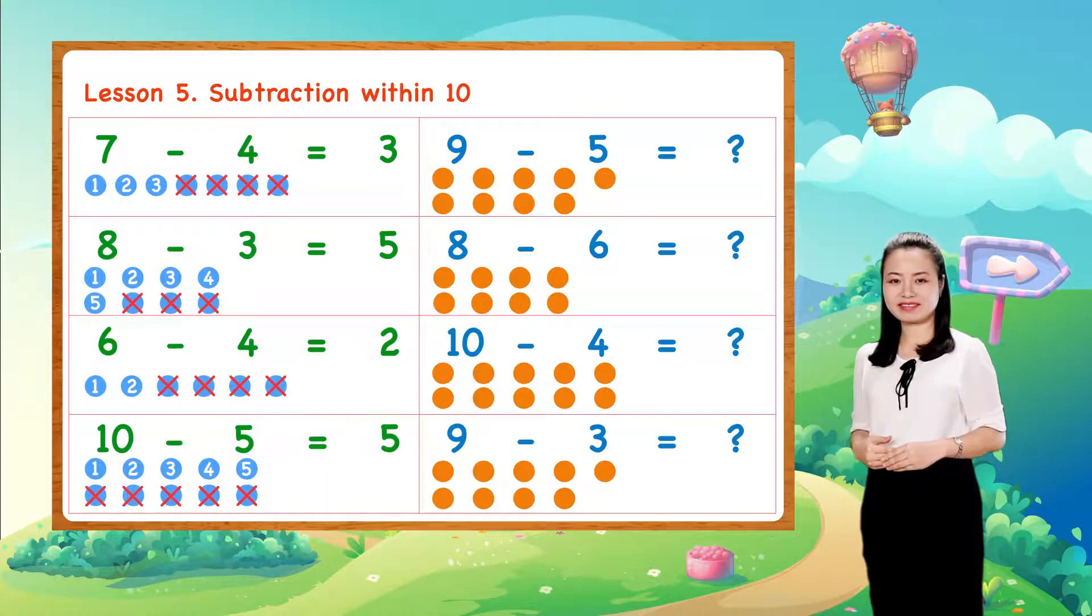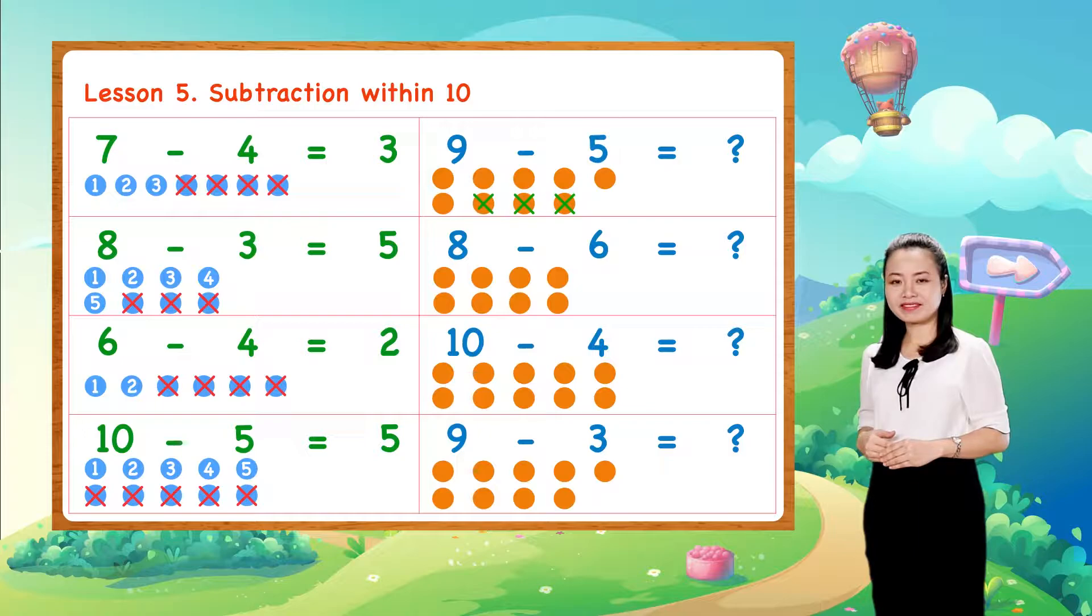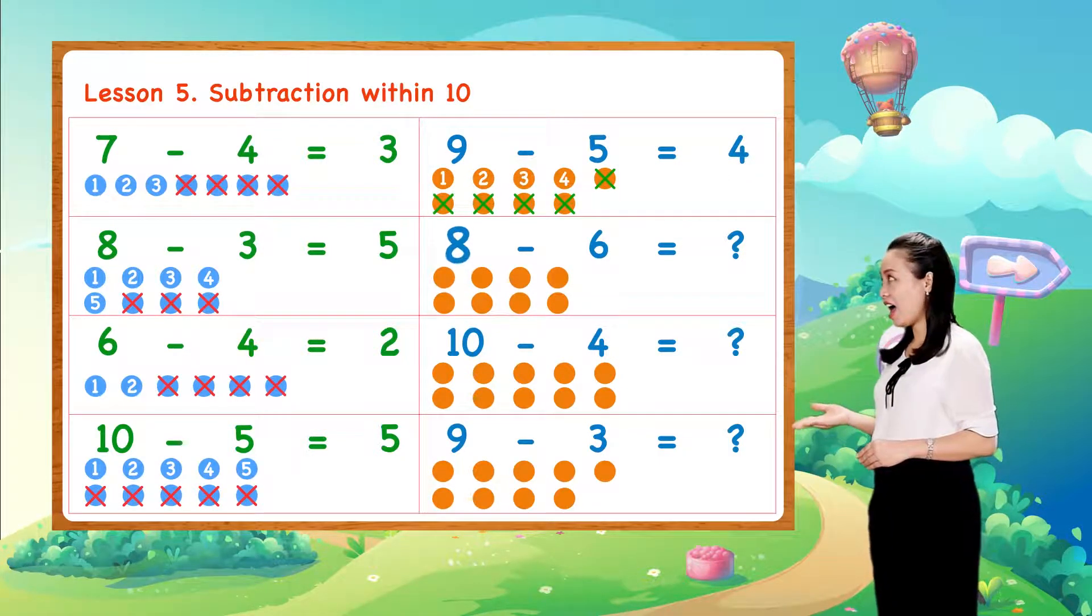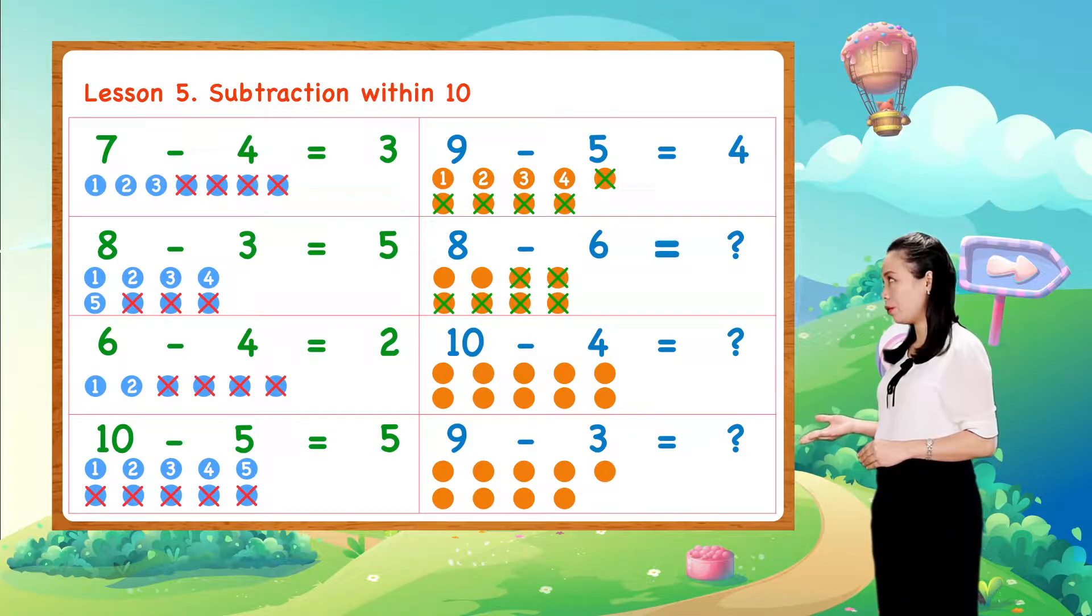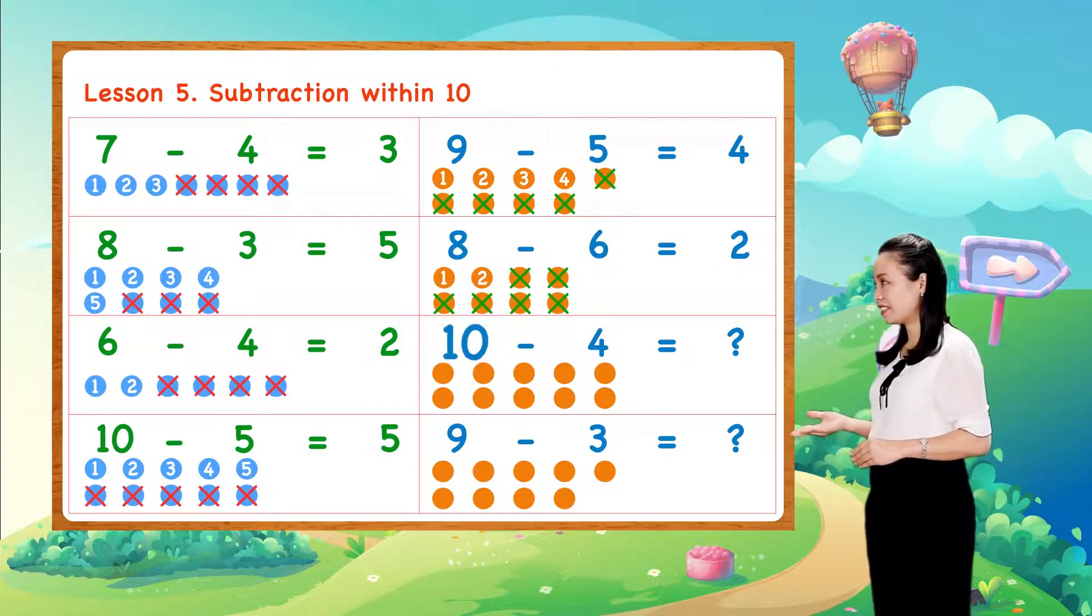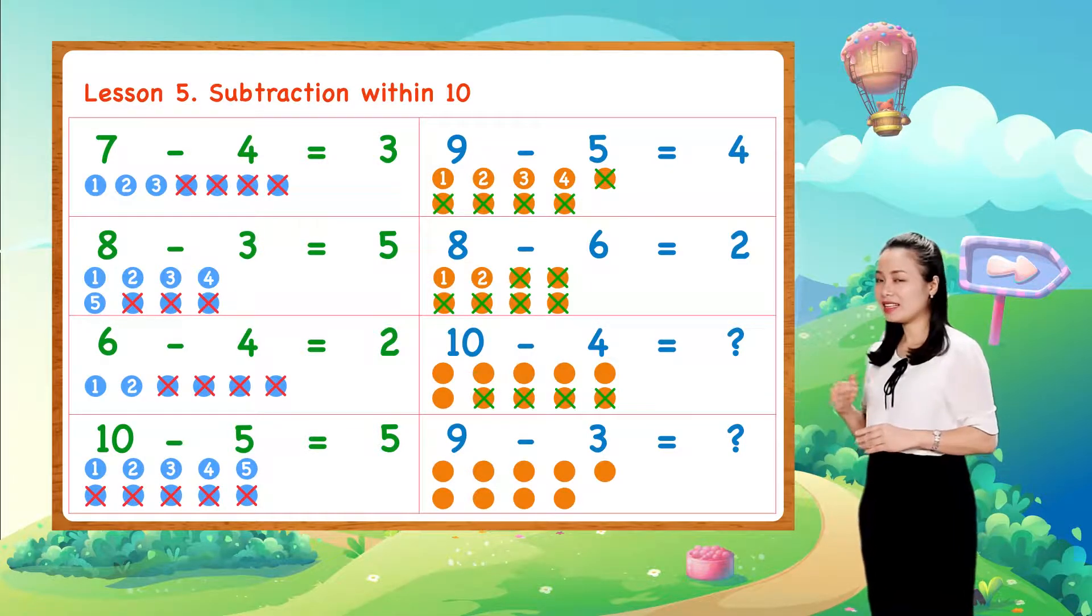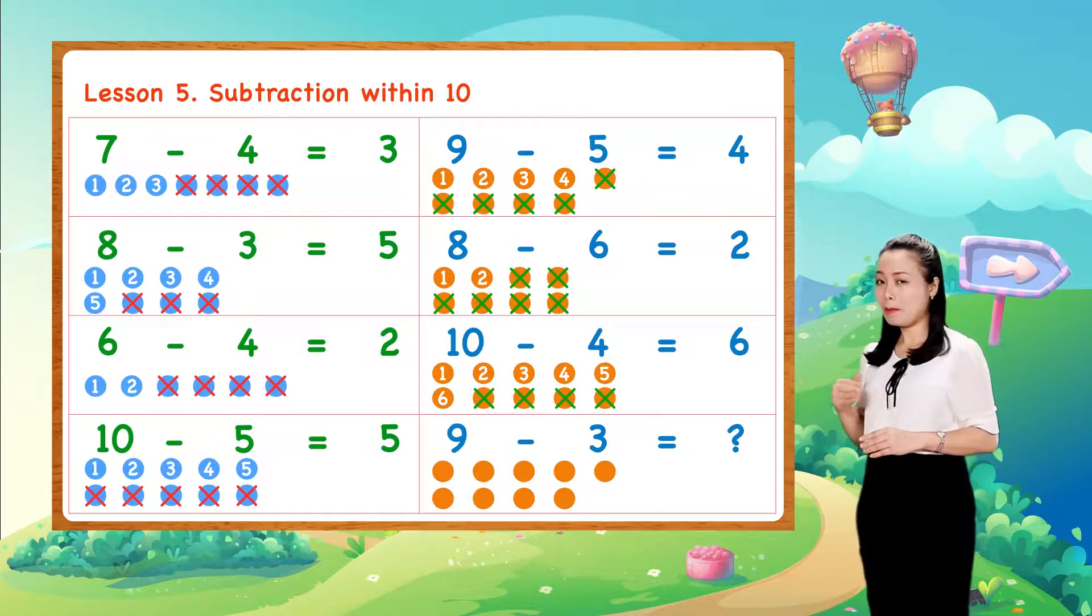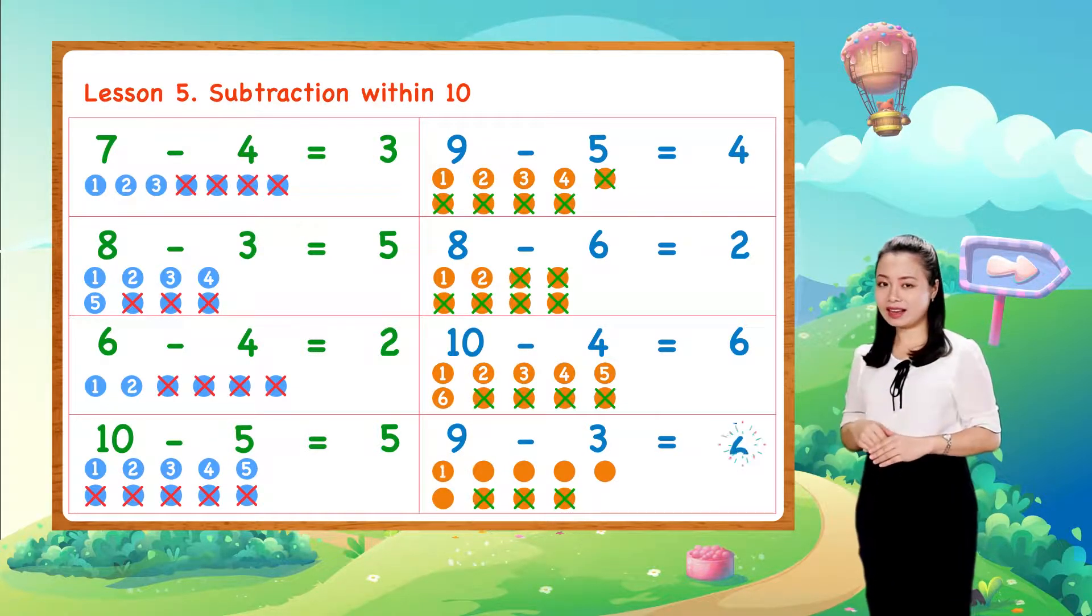Next, 9 minus 5 equals 4, 8 minus 6 equals 2, 10 minus 4 equals 6. Next, 9 minus 3 equals 6.